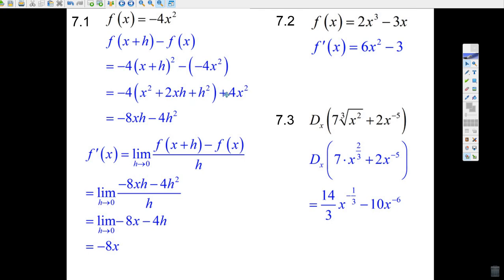Now, here, look at this. Minus 4 times x squared plus 4x squared, that cancels. But minus 4 times 2 is minus 8xh. Minus 4 times h squared is minus 4h squared.